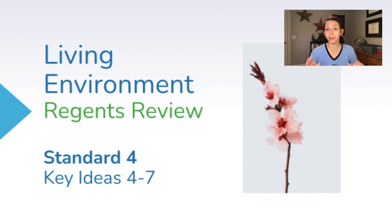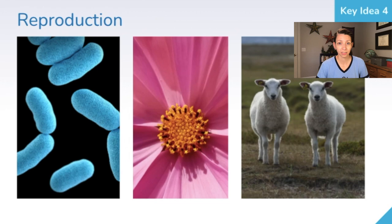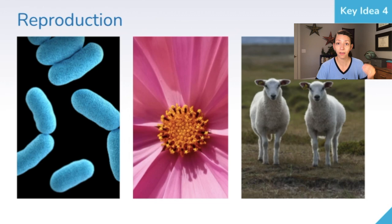Let's dive right in with reproduction. Species have to be able to reproduce in order to pass on their traits and their genes and to survive. Some organisms reproduce asexually and virtually all of their genes come from the same parent, so they're copies of the parent organism.